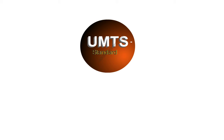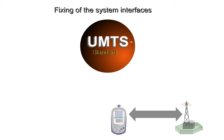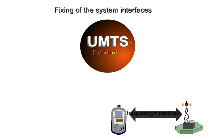The basic demands we've already mentioned define the most important requirements of the UMTS standard. For the air interface, two things are particularly important. Firstly, the transmission frequencies must be allocated and the transmission method needs to be specified.